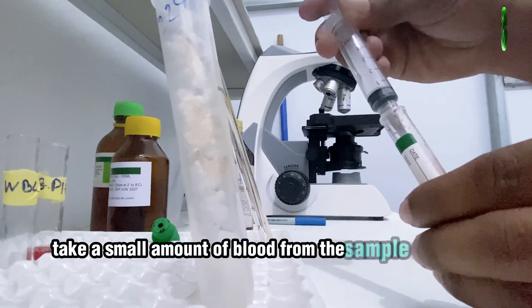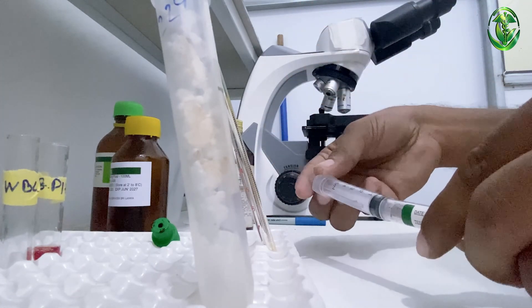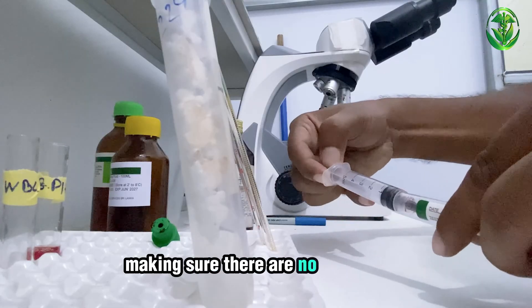Next, take a small amount of blood from the sample using the 5cc syringe. Carefully draw the blood into the syringe, making sure there are no air bubbles.